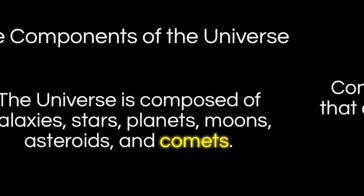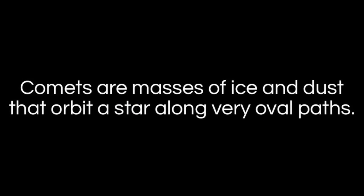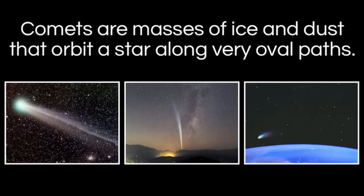Finally, we come to comets. Comets are often referred to as dirty snowballs, because they are masses of ice, dust, dirt, and rock that orbit a star along very elliptical paths. Comets have a very common characteristic: a glowing tail of sublimating gases as they fly through the cosmos. Here you see three comets orbiting the sun, and on the right is probably the most famous — Halley's comet.